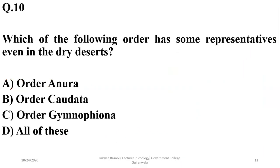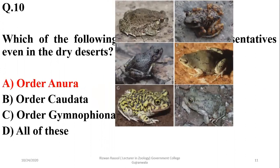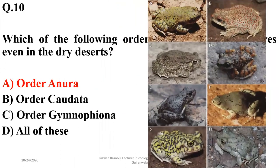Which of the following orders has some representatives even in dry deserts? Amphibians usually live near moist places near water, but some members of Anura, such as certain frogs, are also found in dry deserts and have certain modifications according to desert conditions. So the right option is A.